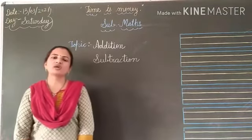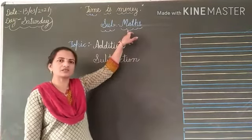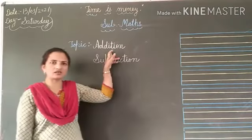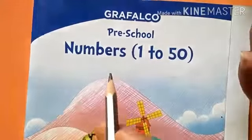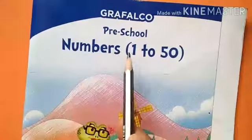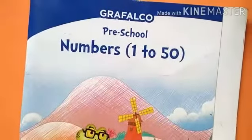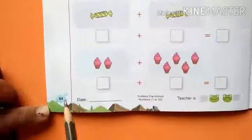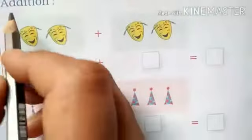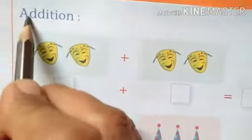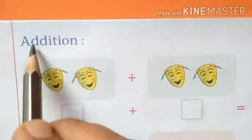Now, today we are going to learn the subject of maths. And today our new topic is addition and subtraction. Students, take your book, numbers 1 to 50, and open your book to page number 64. Okay, now read the instruction: Addition. Today our new topic is addition.